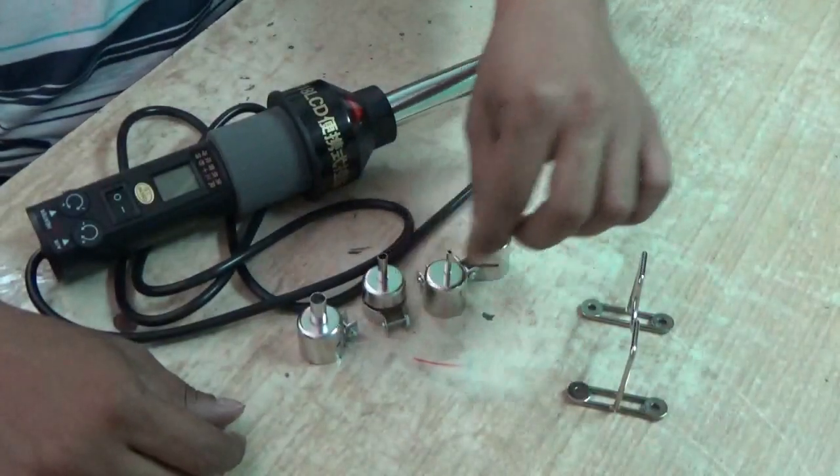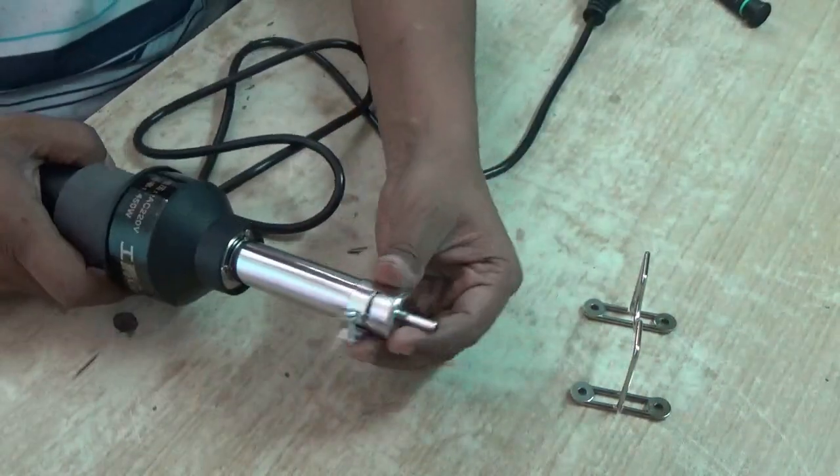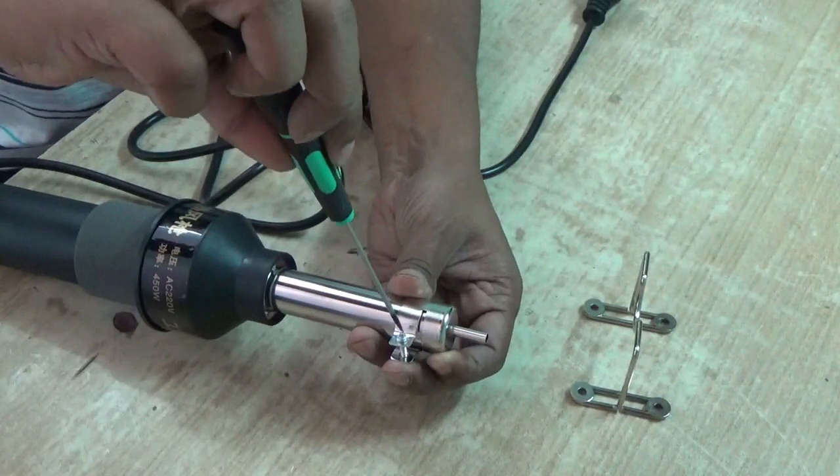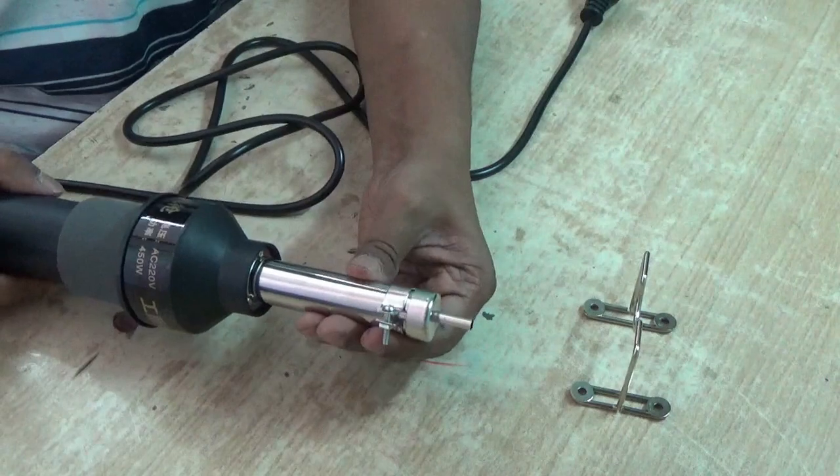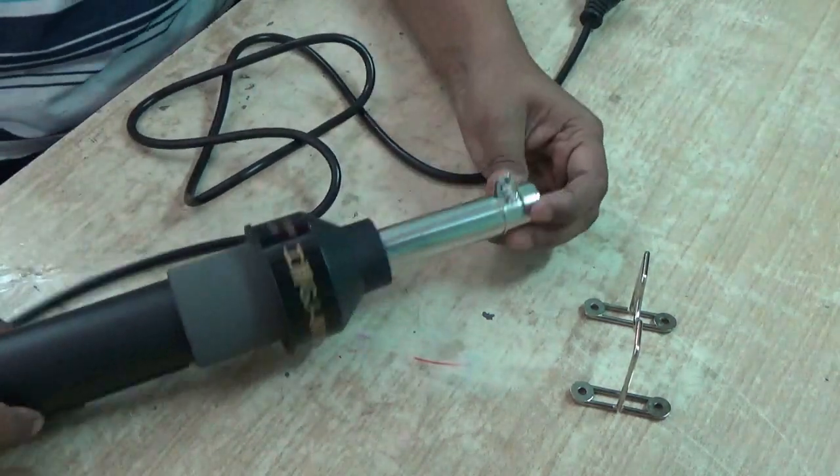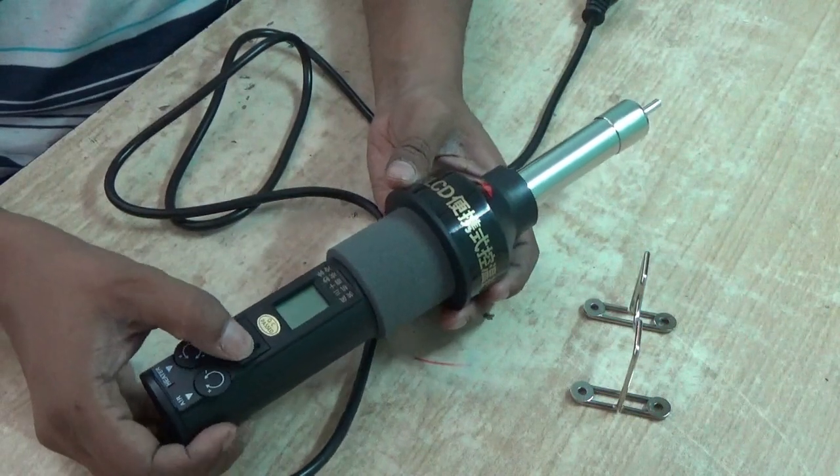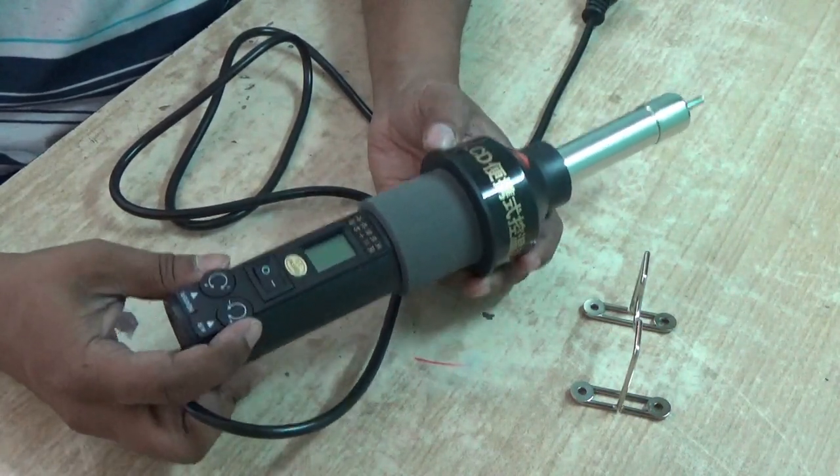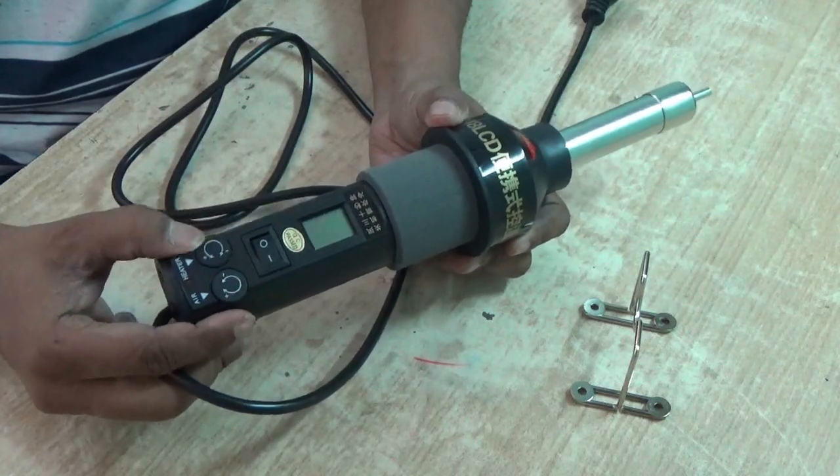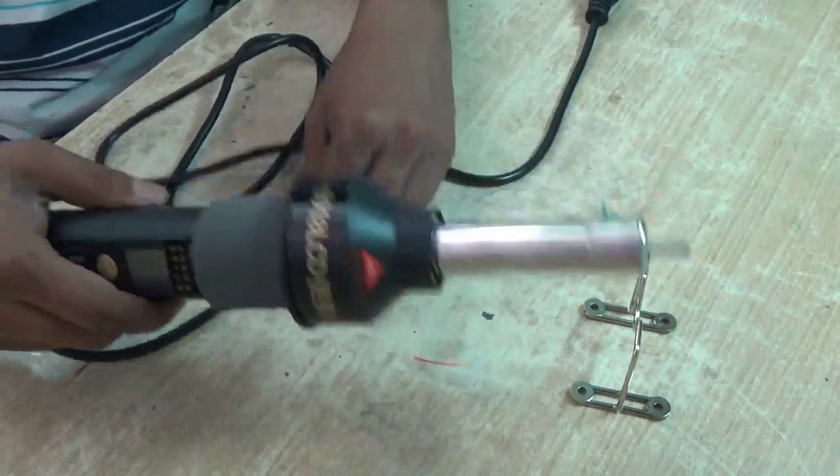You can choose the nozzle as per your work and then screw it at the front of the heater. It comes with a power on/off switch and two variable switches which are used to increase and decrease the temperature and the air flow. Let's power it up.